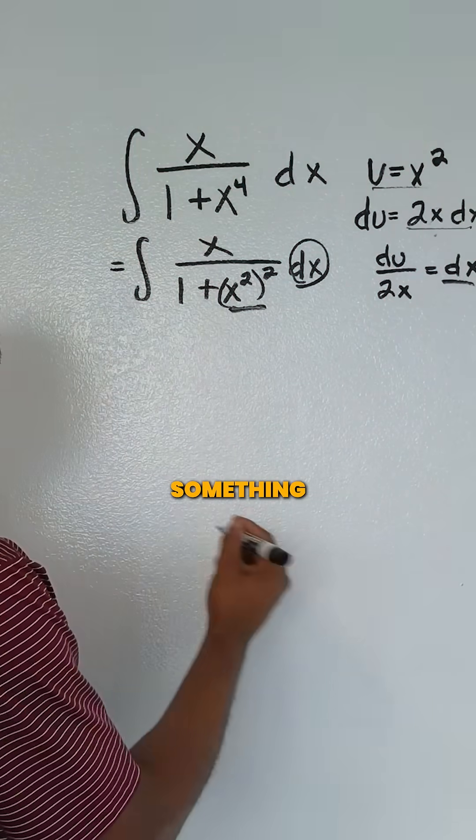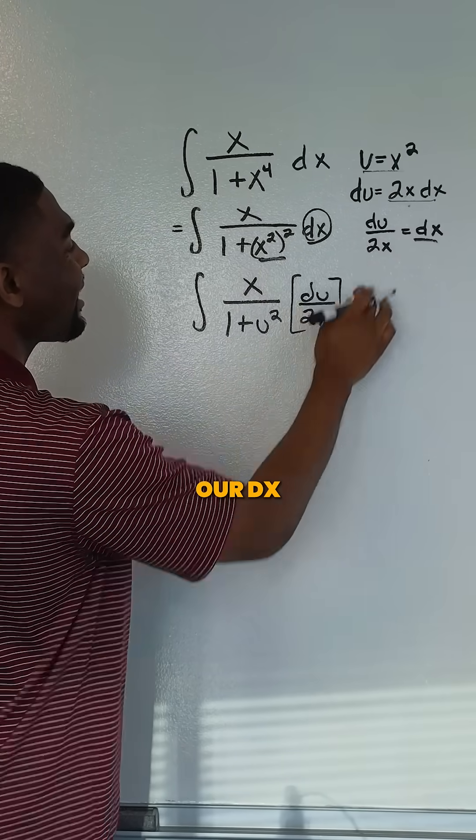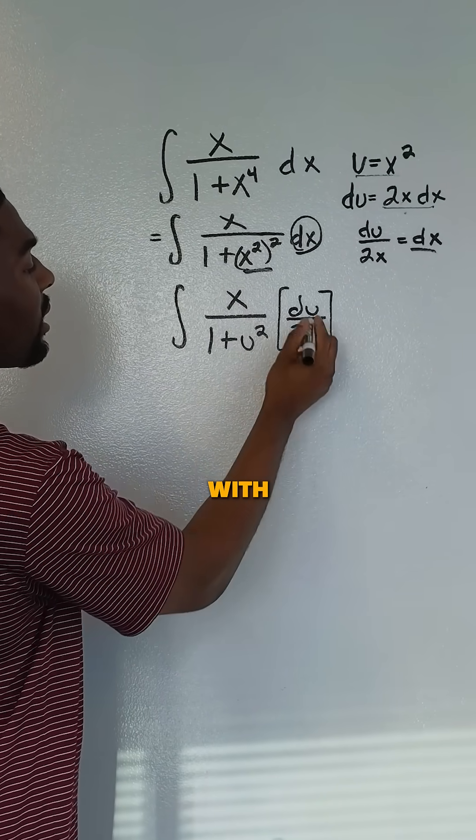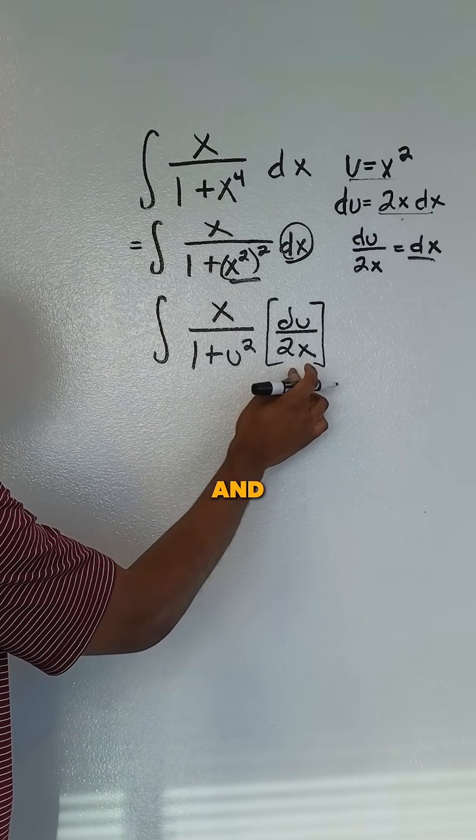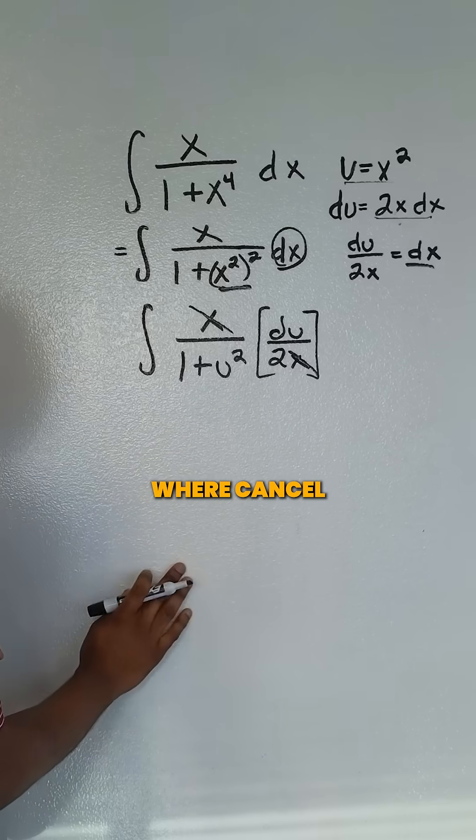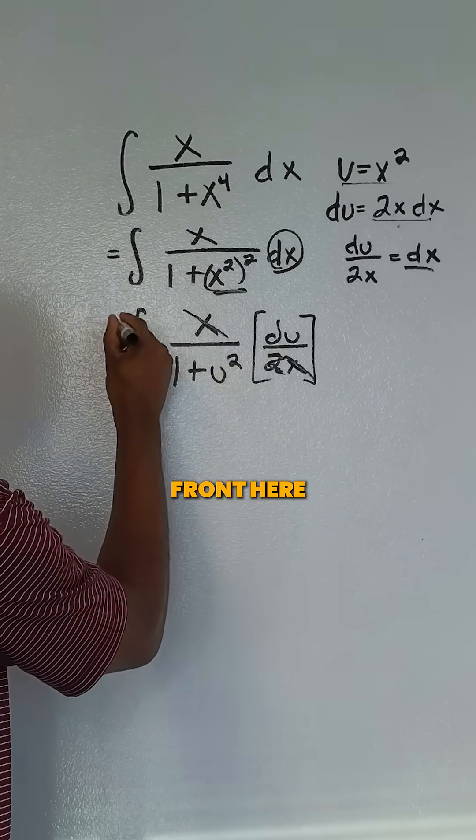So at our next step we should have something like this. Once we replace our dx and our x squared, we're simply left with du over our 2x. We can see that the x's here were cancelled, and then we'll get a one half that comes out in front here.